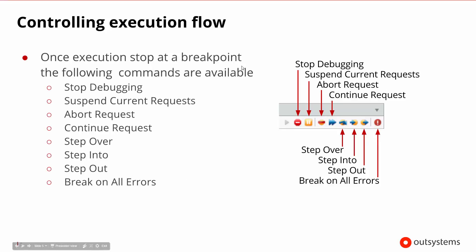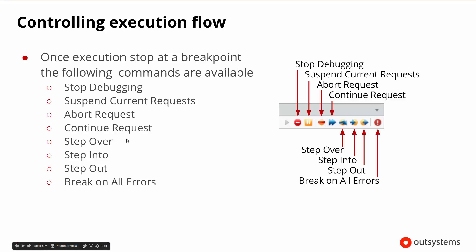Once we stop at a breakpoint, down in the debug tab there are different types of commands that allow us to control the execution flow. We can either stop debugging completely, abort the given request, let the request continue, or take a more controlled approach and step over, step into, or step out of a particular component. We can also ask it to break on all errors, so any error that occurs will cause it to stop so we can inspect variables.